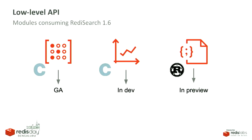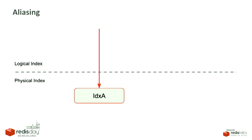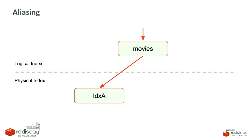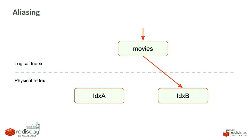Next up is aliasing. Currently in Redis Search you have physical indices. You can now also create a logical index and point it to a certain physical index. You can configure your application code to point to the logical index. Then you can load a second physical index and change the logical index to point to the new one. This is quite beneficial because your application has no downtime — you don't have to reconfigure your applications to point to a new physical index.